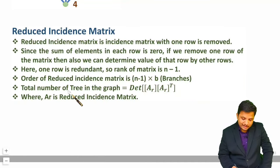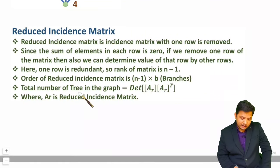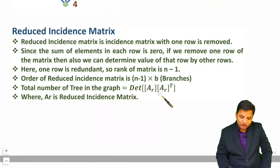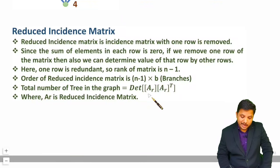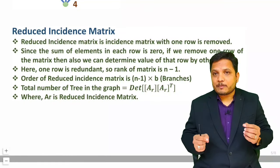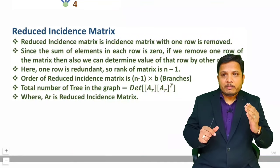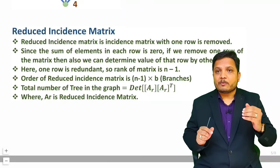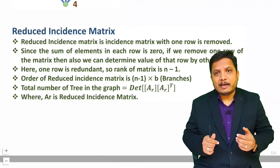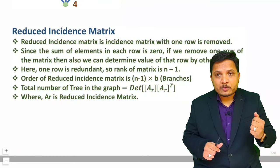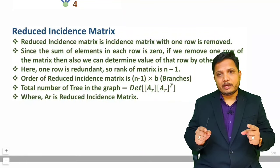It is very essential to know how to identify the total number of trees in a graph. Once you have the reduced incident matrix Ar, by computing the determinant of Ar × Ar^T you can find the total number of possible trees in the graph. In the next video I will explain practical examples calculating the number of possible trees, covering incident matrix, reduced incident matrix, and total number of trees in a graph. Thank you so much for watching.